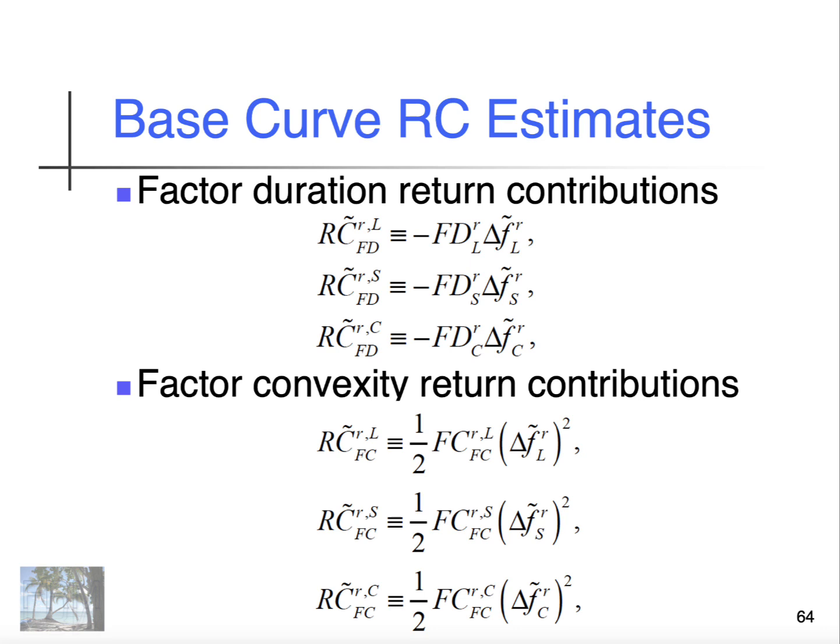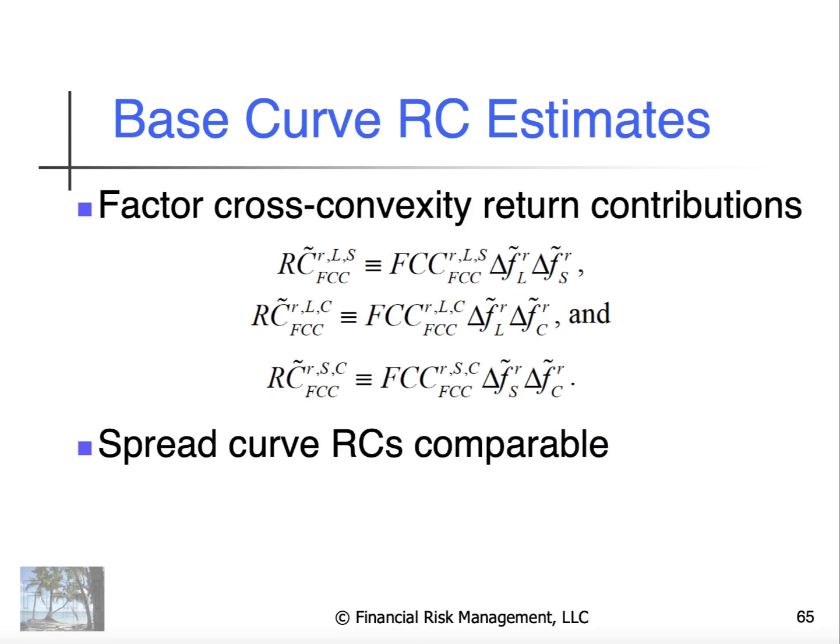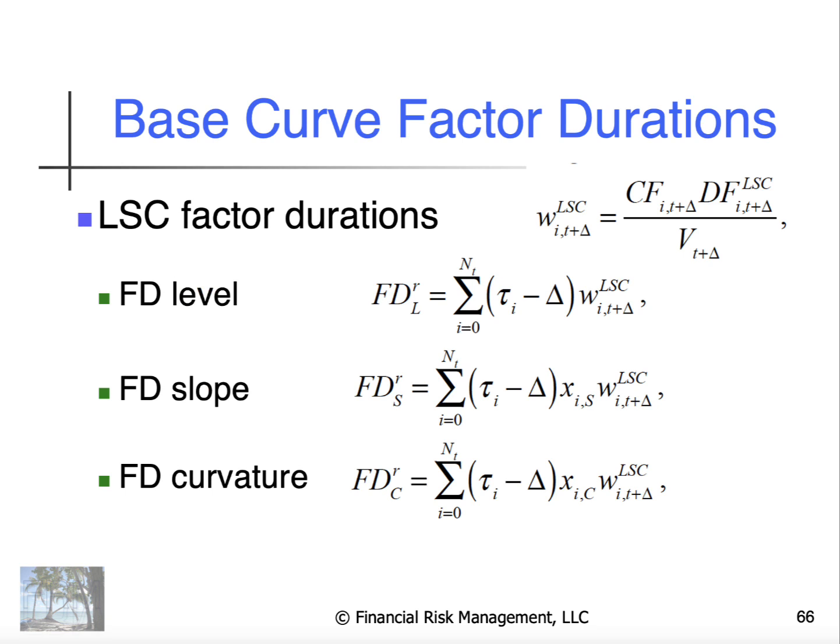Factor duration return contributions can be measured this way. Same idea with factor convexity return contributions, cross-convexities in the same way. And so the factor duration of the level, slope, and curvature, the only thing that changes here is the weighting scheme applied to slope and the weighting scheme applied to curvature. And so we have an easy and direct way to calculate factor durations for level, slope, and curvatures.